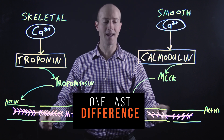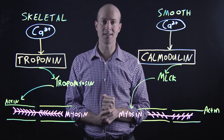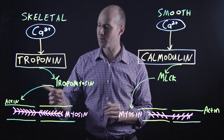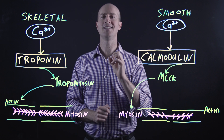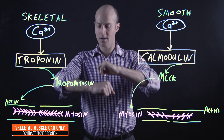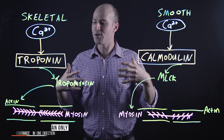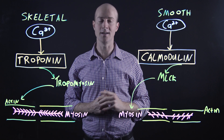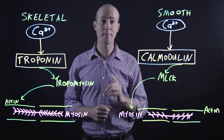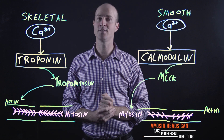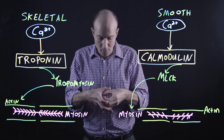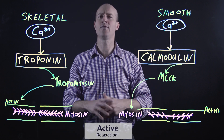One last difference: if we look at how I've drawn the actin-myosin filaments — notice the myosin filaments here have heads facing in two different directions, whereas in skeletal muscle they only face in one direction. In skeletal muscle, the myosin heads are aligned perfectly so they can only contract in one direction; the cross-bridge cycling pulls along the actin and shortens those sarcomeres in one direction. In smooth muscle, resistant to fatigue, far more energy efficient, and slower, the myosin heads face different directions, which means you can contract in any direction. You can enlarge a hollow organ or contract a hollow organ — we call that active relaxation.